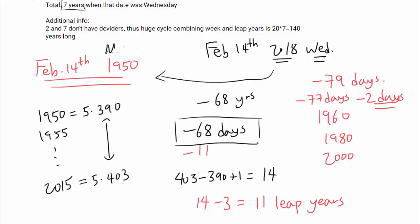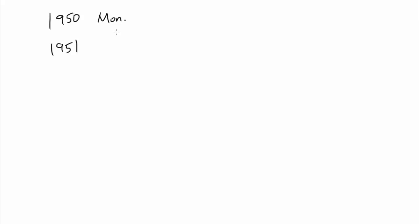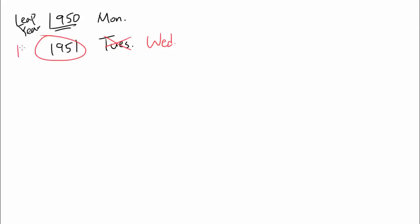So on 1950 it was Monday. On 1951 we would expect Tuesday, but remember 1950 is a leap year, so we throw in one extra day between 1950 and 1951. So 1951 is actually Wednesday. We've found our first year — that's one.